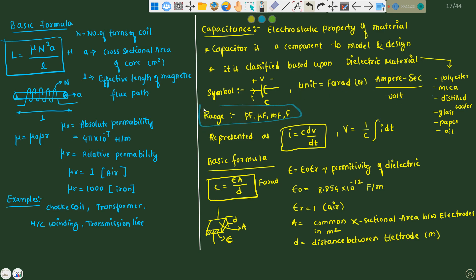Unit is farad or ampere second per volt and ranges lies from picofarad, microfarad, millifarad, farad, and represented as I equals to C dV by dt. This is one kind of Ohm's law. It is also represented like V equals to 1 divided by C integration of I dt and basic formula is C equals to epsilon A divided by D, where epsilon is permittivity of a capacitance. We have absolute permittivity and relative permittivity of a dielectric. Absolute permittivity, its value is 8.8542 into 10 raise to minus 12 farad per meter. Relative permittivity of dielectric in air is 1. Here A represents common cross sectional area between electrodes in meter square and D represents distance between electrodes in meter. As distance increases between two electrodes, the capacitance will decrease.